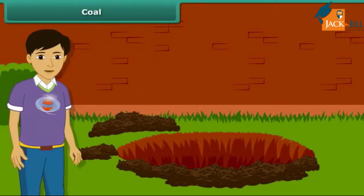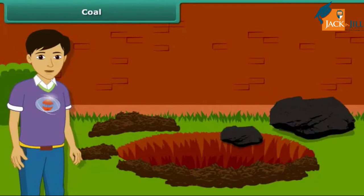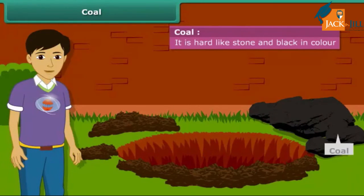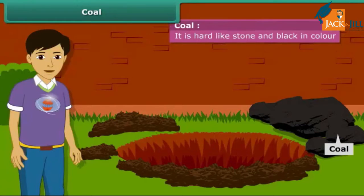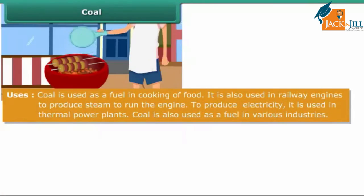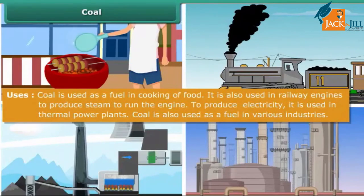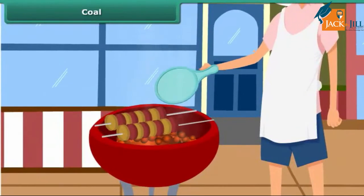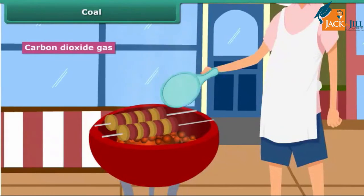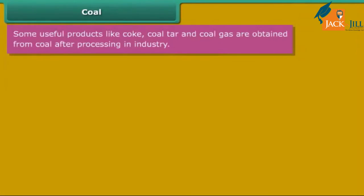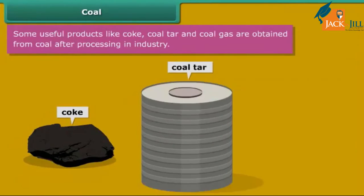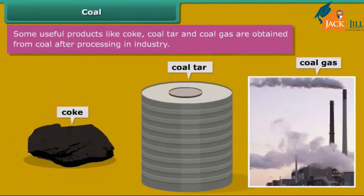Now let us know about these fossil fuels in detail. Let us start with coal. Coal is hard and black in color. It is used for a variety of purposes such as cooking food, running railway engines, thermal plants, and various industries. After heating in air it starts burning and produces carbon dioxide gas. Some useful by-products of coal like coke, coal tar, and coal gas are obtained directly from coal.